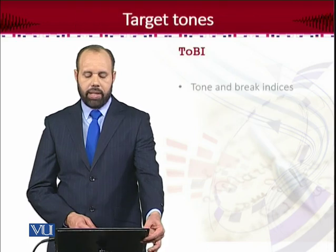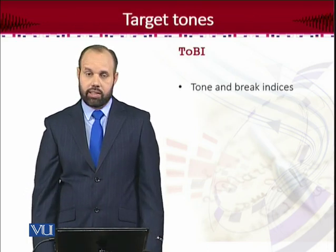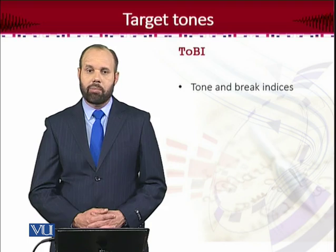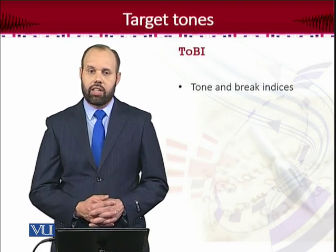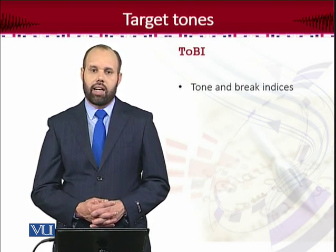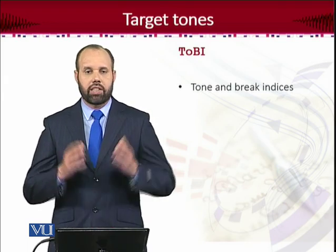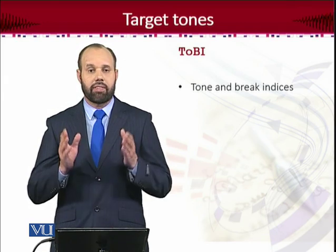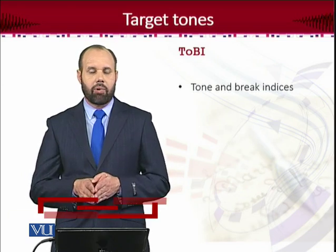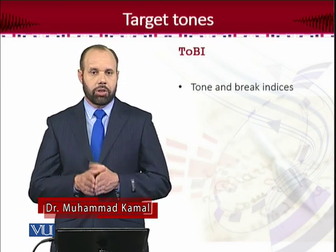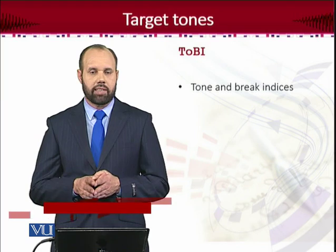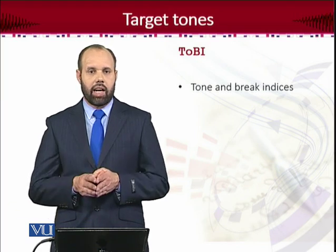TOBI stands for Tone and Break Indices. It's given in the fifth chapter of your book by Leda Fogerty and Johnson. That's an important and rather more effective way to explain intonation, because we are analyzing intonation within speech, within different varieties or within language spoken by different people, within different circumstances and environments, using the same framework. This framework gives quite useful ways to not only understand the intonational patterns, but we can also describe those intonational patterns in terms of the breaks in diocese.